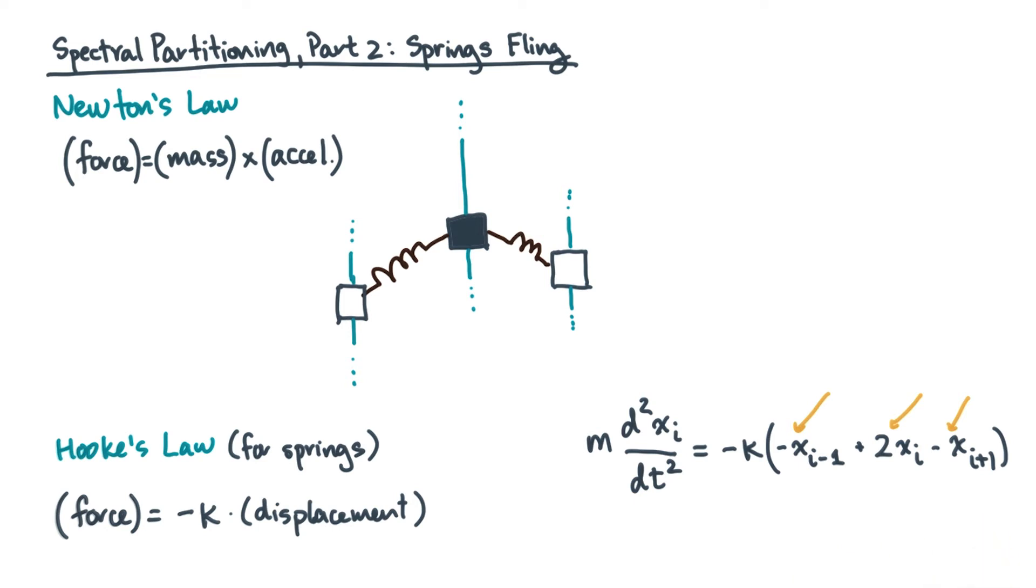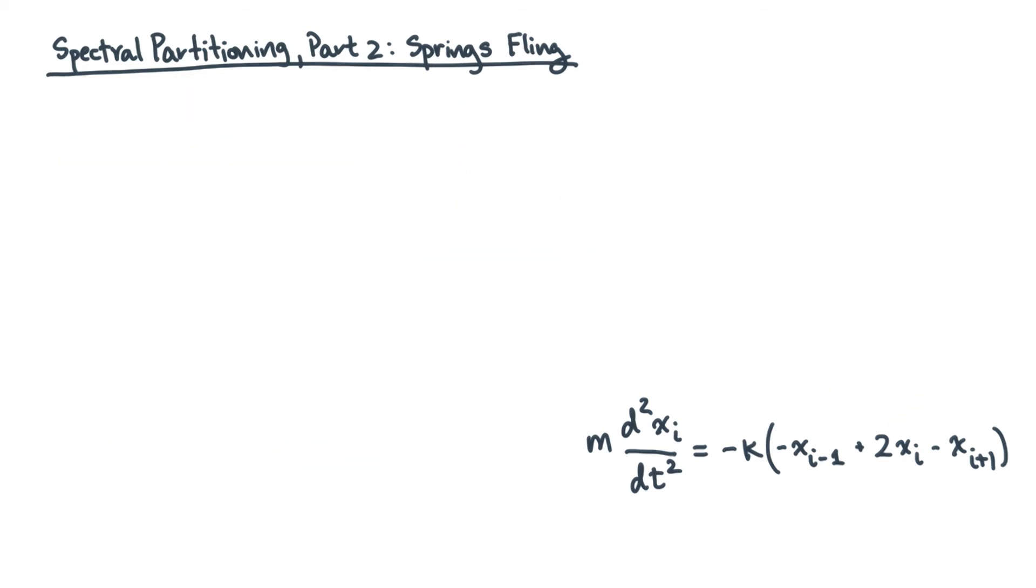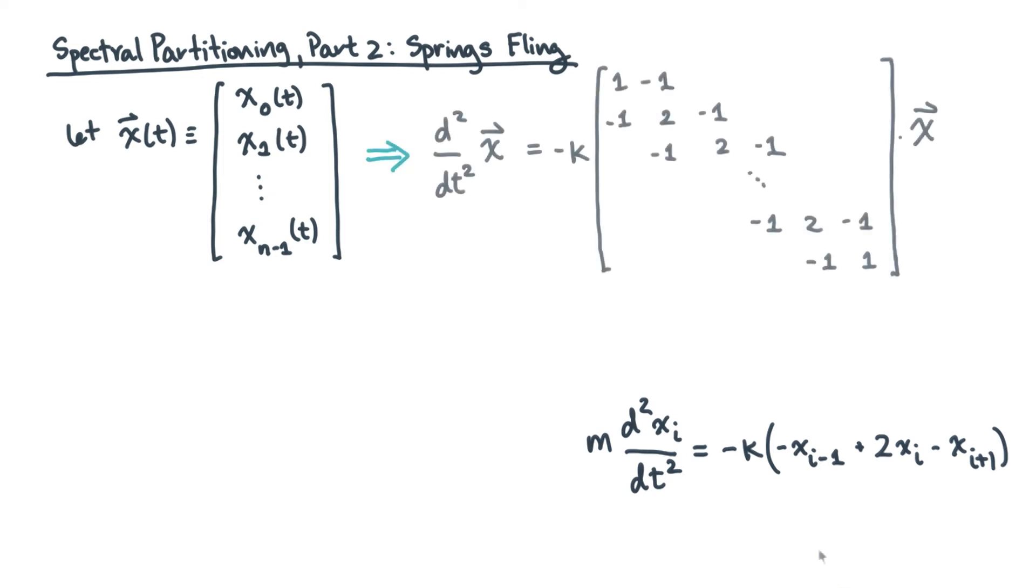In fact, I can rewrite this entire system for all the masses as a system of differential equations. Let's define a vector x arrow whose components are all the spring displacements. Then the entire system of differential equations can be written in the following form. I've used matrix notation here to express the entire system very compactly.